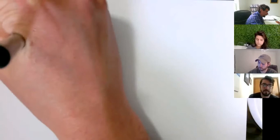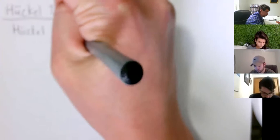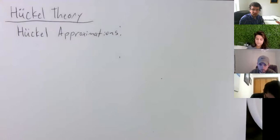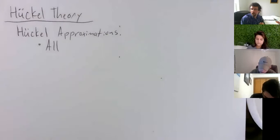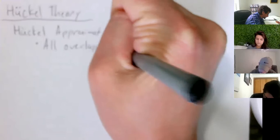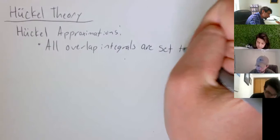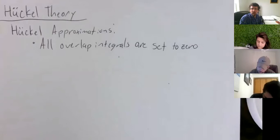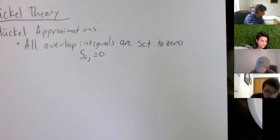So the first thing is, there are Huckel approximations. And in the Huckel approximation, all overlap integrals are set to zero. So what symbol did we give the overlap integral again? S? Yep. So Sij is equal to zero.